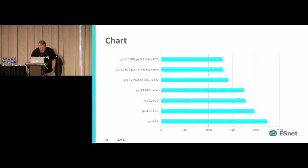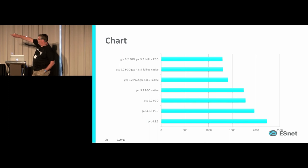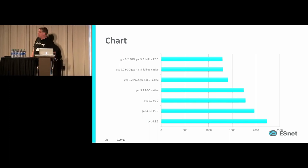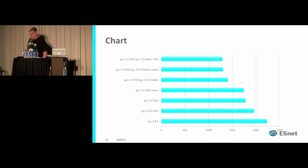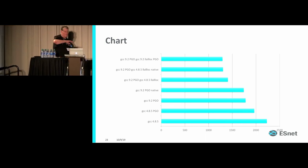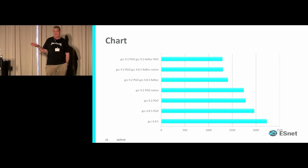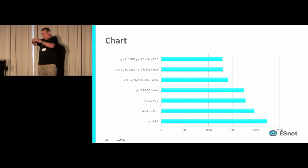Here's a chart — hard to read, but at the bottom is the original compile and at the top is where we ended up. That looks pretty good. I want to emphasize that nothing I've been speaking about is specifically Zeek-related — Zeek was the focus of my analysis, but there's tons of software out there that could benefit from this same methodology.